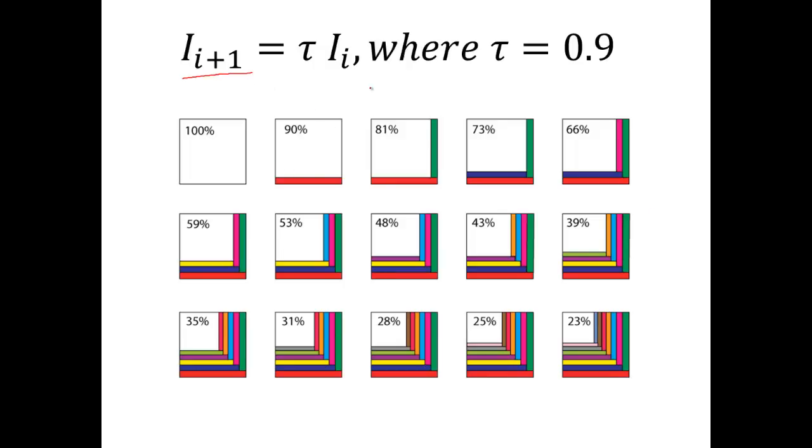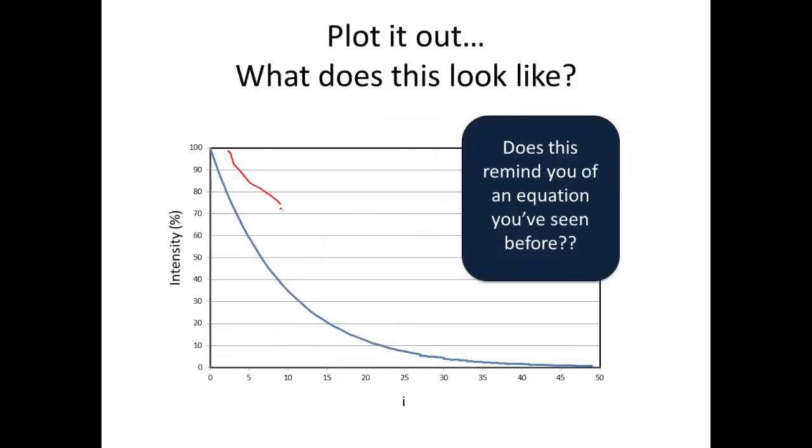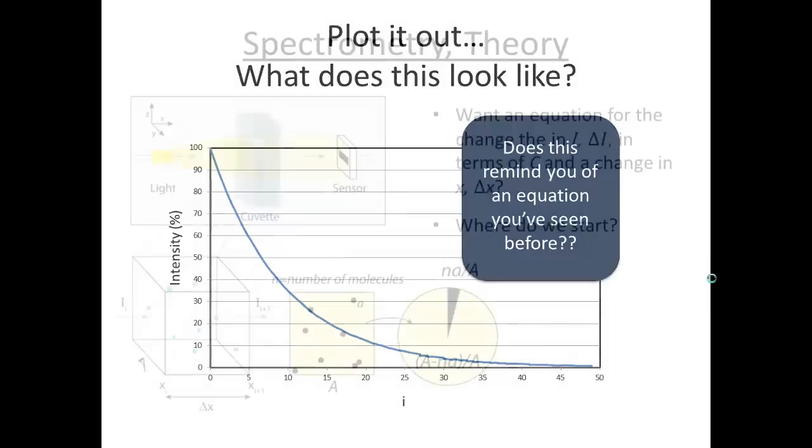What would that look like graphically? In the slice I plus one it's a function of the previous intensity times some factor tau. If we start out with a hundred percent light, in this case we're assuming tau is ninety percent. Ninety percent of a hundred is ninety, but in this next step we take ninety percent of ninety which is eighty one percent. Ninety percent of eighty one is seventy three. So on and on and we asymptotically approach zero. If we plot this out we end up with a plot that looks kind of like this. You should recognize this has some sort of exponential decay. Should look like something like one over x to some positive power.